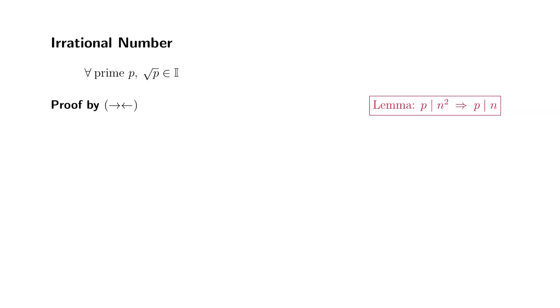Let's look at this following statement. For all prime number p, square root of p is irrational. So let's prove this by contradiction.